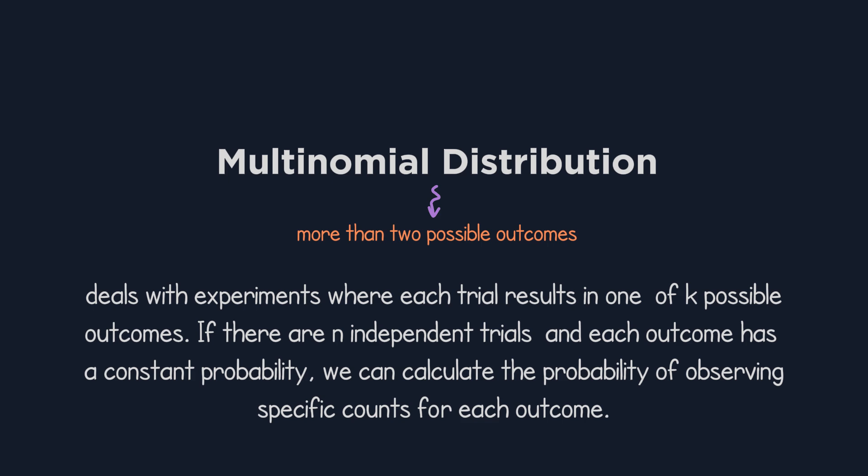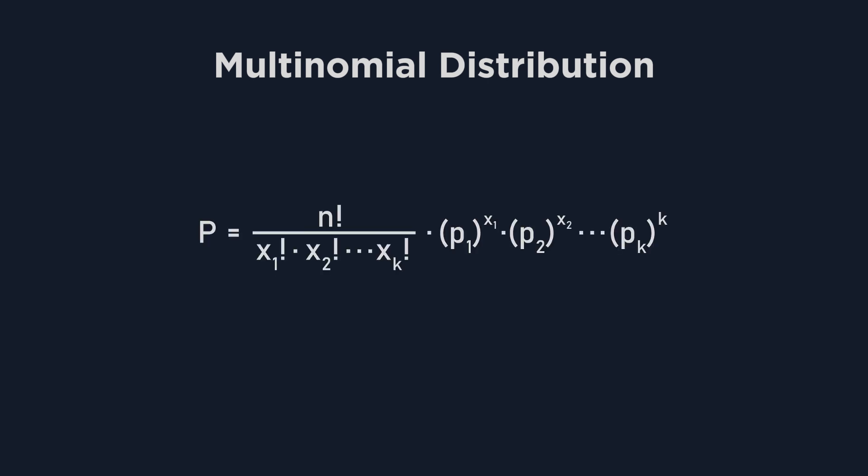When you're dealing with multinomial distribution, the key structure to remember is that there are more than two possible outcomes for each trial, and you're asked to find the probability of getting specific counts for each of those outcomes over a fixed number of trials. Now that we've identified this as a multinomial distribution problem, let's take a look at the formula.